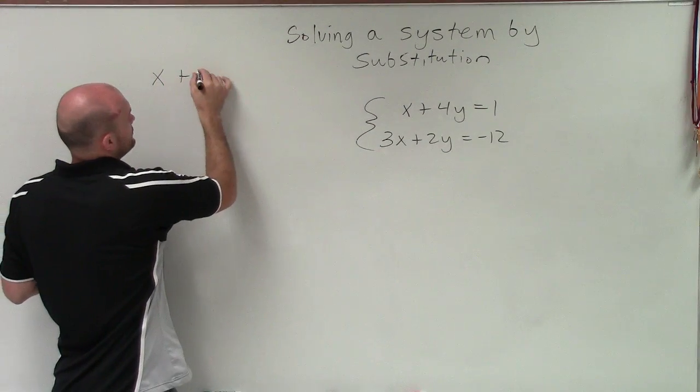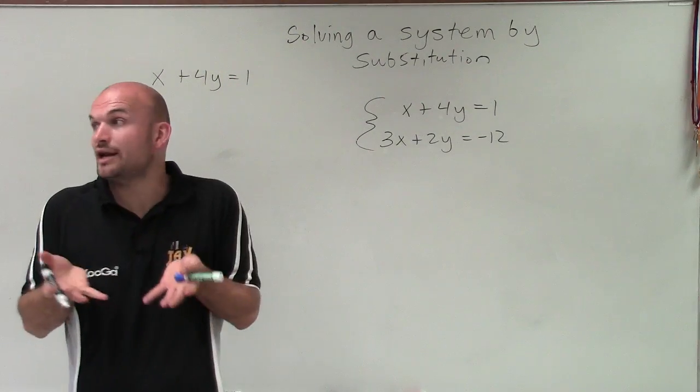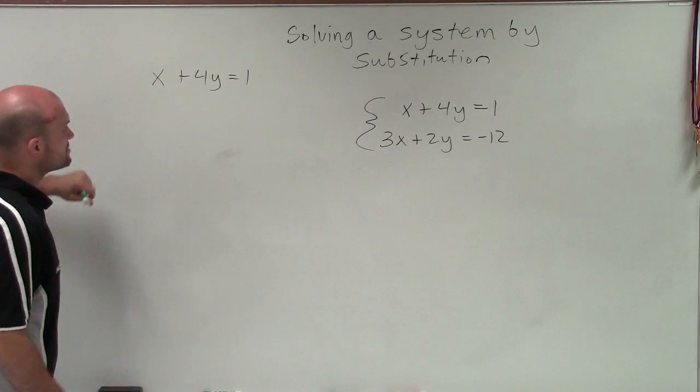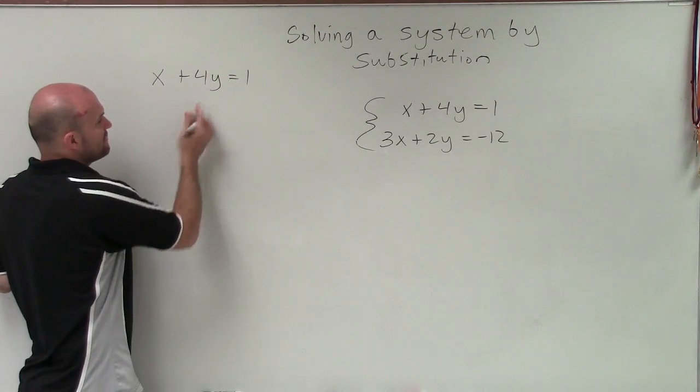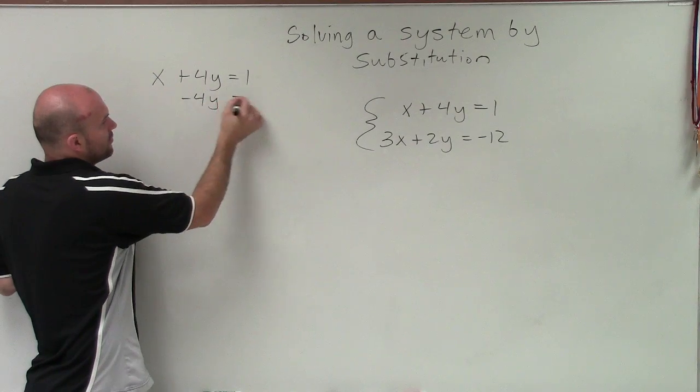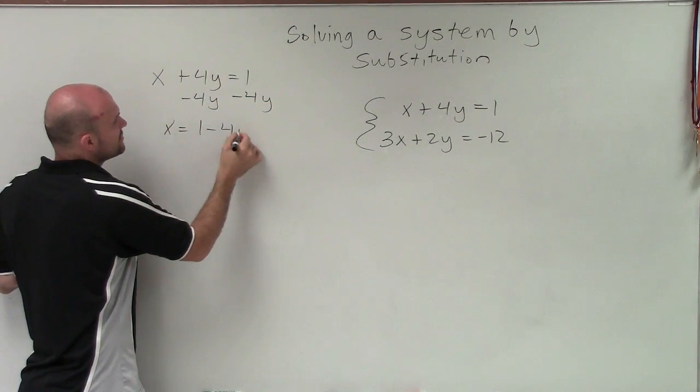So to isolate it, what that means, again, is just to solve for that variable to get it all by itself. So to get x by itself, I need to undo what's happening to the variable. It's being added by 4y. So I'm going to subtract 4y on both sides. So I have x equals 1 minus 4y.